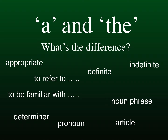Now, starting on the left: 'Appropriate' means correct or okay for a situation. 'Definite' is sure or fixed, and 'indefinite' is the opposite — general or not fixed. To 'refer to' something is to talk about something we know, maybe something we just talked about. Probably you understand the expression 'to be familiar with something' — it means something that we know or know about. Next: 'noun phrase' — it's like a noun, but with two or more words, such as 'my dog' or 'the tallest tree'.